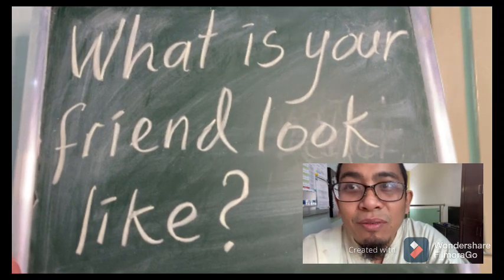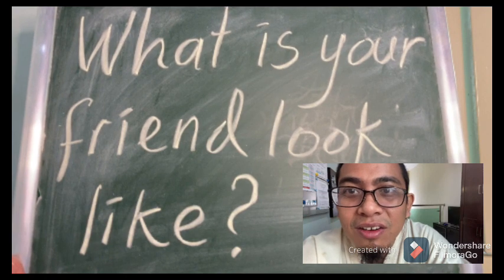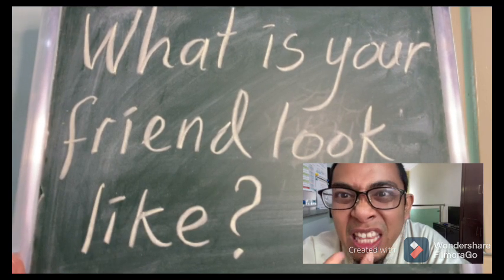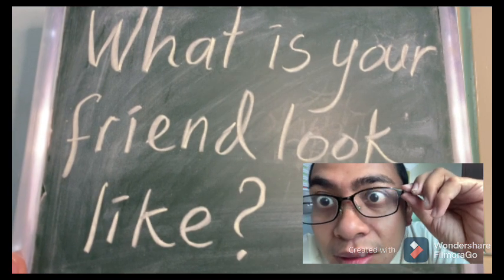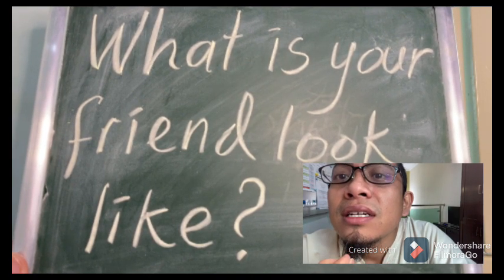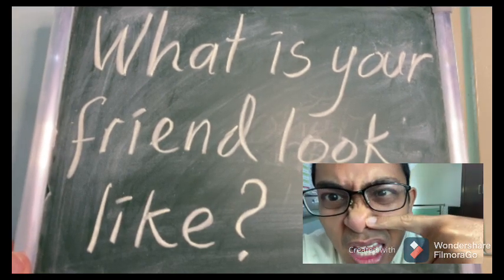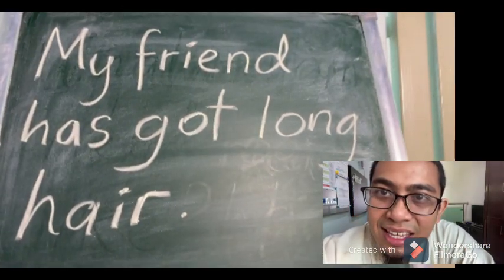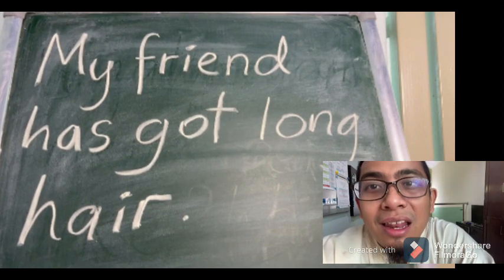Now I'm going to ask: what does your friend look like? Does he have short hair, long hair, brown eyes, big teeth, or small teeth? Is he wearing spectacles, or does he have a beard like me, a mustache, big ears, or a big nose like me? You can answer: my friend has got long hair.